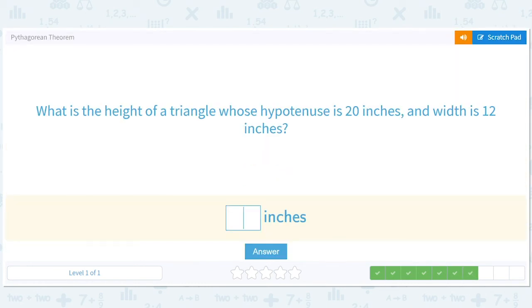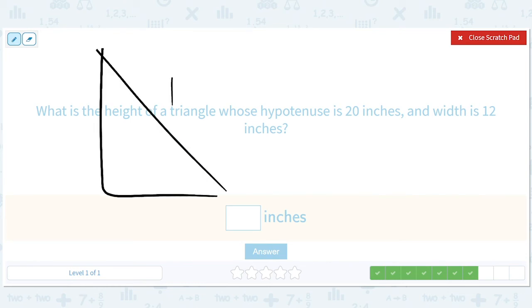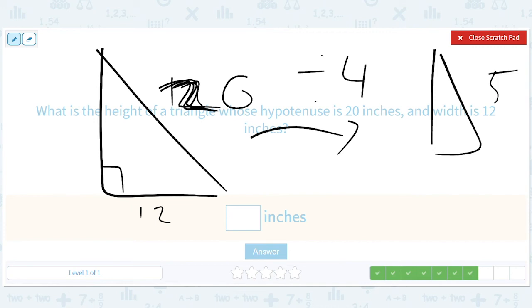What is the height of a triangle whose hypotenuse is 20 inches and width is 12 inches? Hypotenuse is 20, the width is 12. Let's do this thing where we divide everything by—what's a number that goes into both? 4. So that would give us a 5 here, a 3 here, and this would be a 4. So if we want to go back to get this, we can multiply by 4 and get 16 inches.